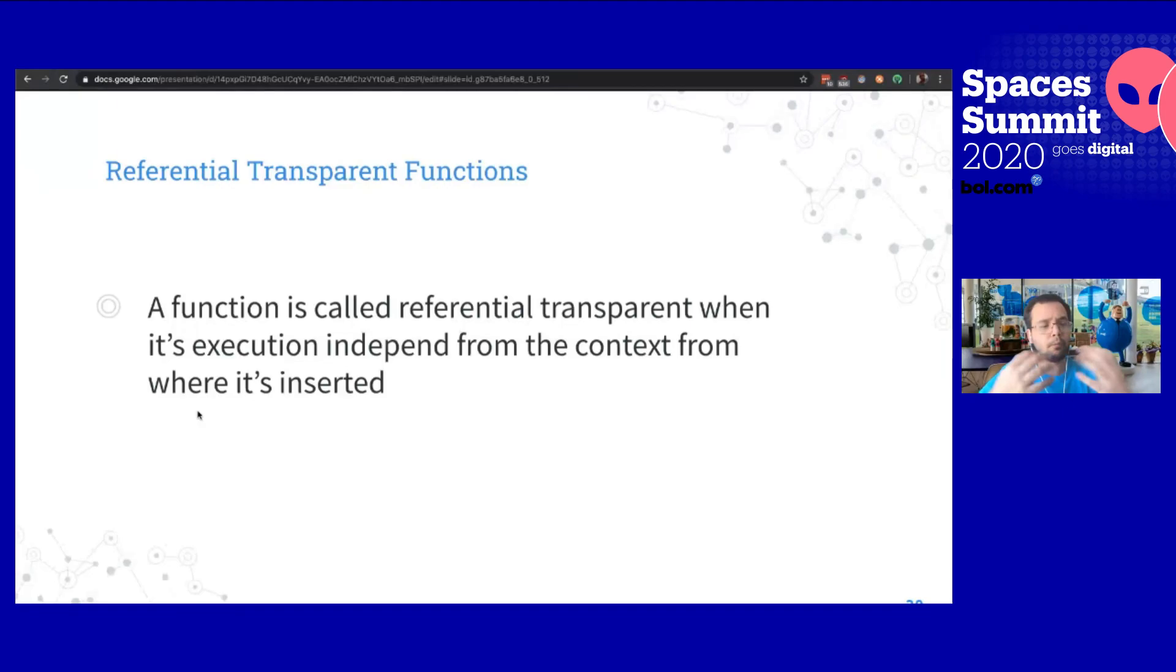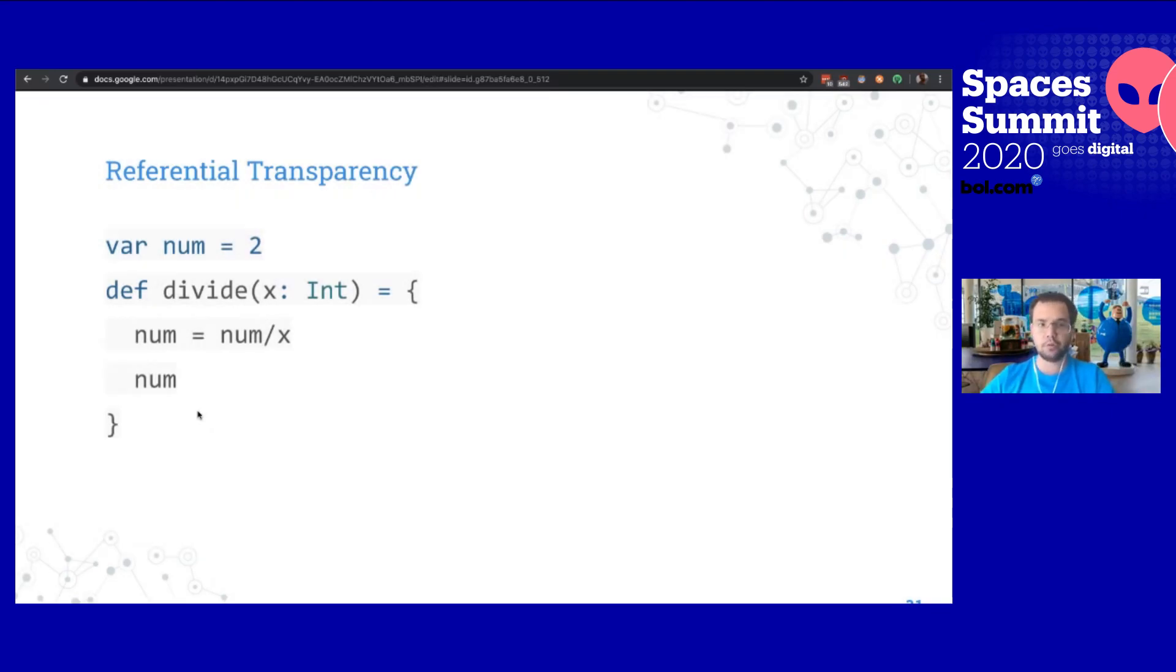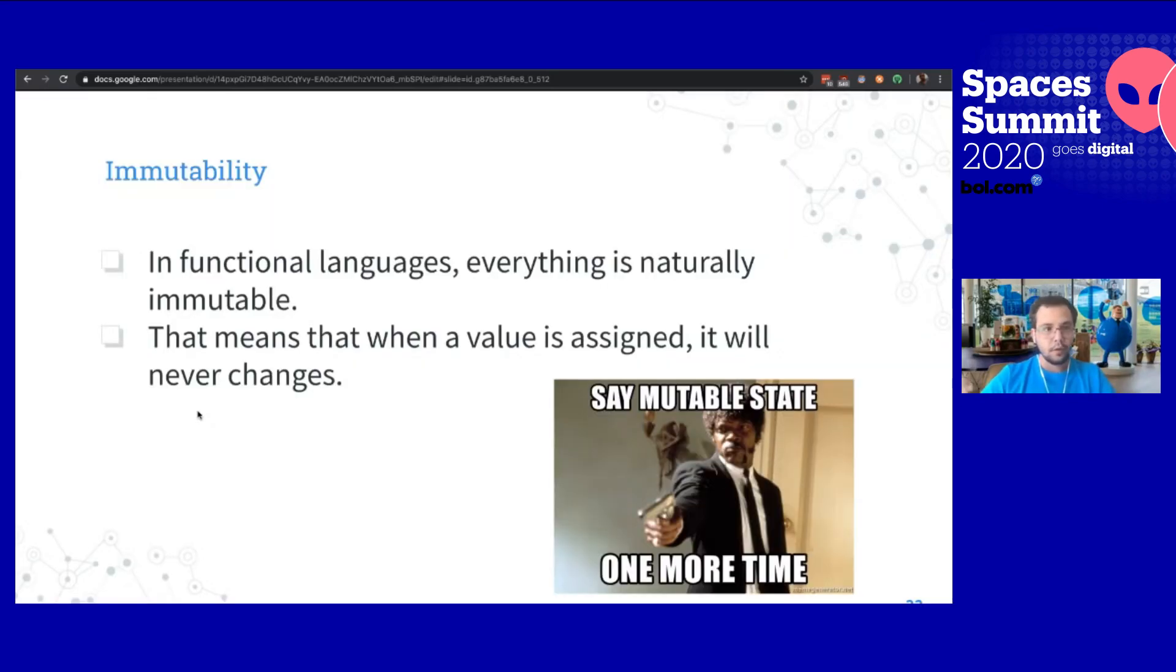When can we call a function to be transparent? A function is transparent when its execution is independent from the context from where it is inserted. So if you have a function in the module Y and you call that function in the module X and Z, depending on from where it was called, it will return always the same stuff for the same parameters. For example, this one is not a transparent function because there is a variable that is bleeding inside the function. This function is also not pure because it can change depending on what is in the module or class.